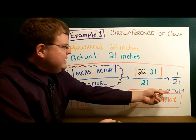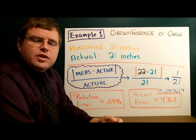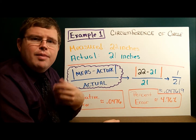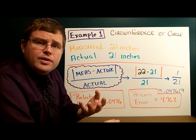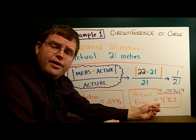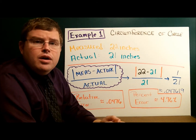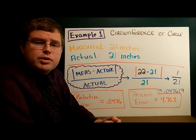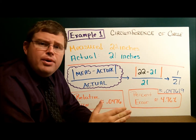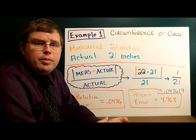That decimal, 0.047619, is our relative error. Now, often we look at what we call the percent error — in science especially, they like to talk about percent error. Percent error simply means converting that decimal to a percent by moving the decimal point two places to the right. So the percent error is 4.76%. That means I'm about 4.76% off, so my measurement is about 95% accurate. Whether that's acceptable depends on your particular application.